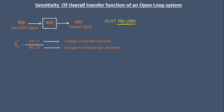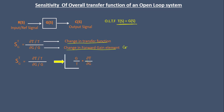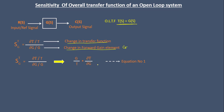We know the basic formula of sensitivity, which is ∂T/T with respect to ∂G/G, where ∂T/T is the change in transfer function and ∂G/G is the change in forward gain element G. To find the sensitivity for an open loop system, we can write this as G/T into ∂T/∂G — we can mark this as equation number one.